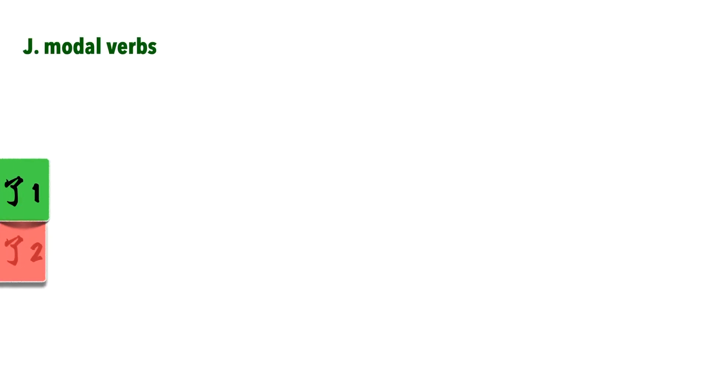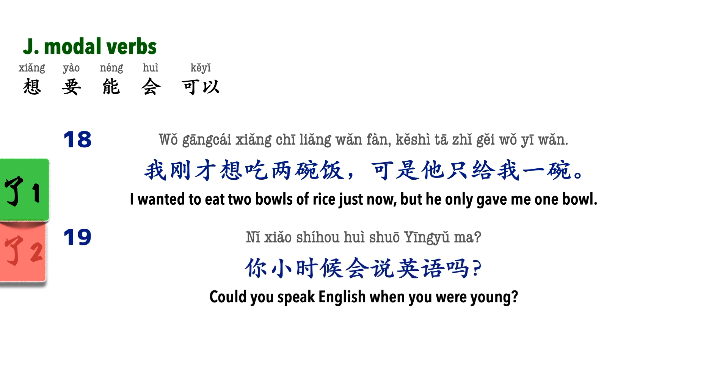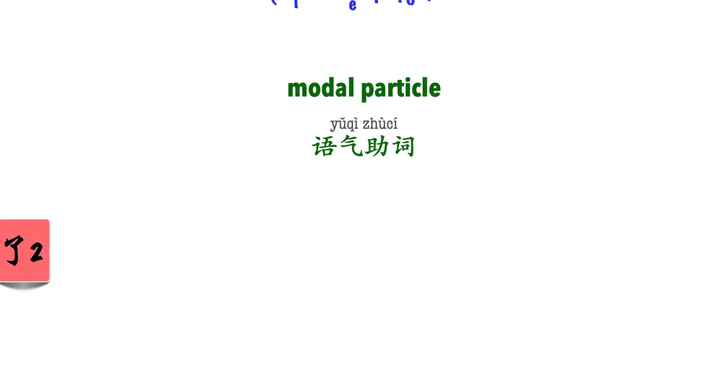Modal verbs. Modal verbs like 想,要,能,会,可以 express possibility, ability, or willingness, not completion, so again, 勒1 is not used. 我刚才想吃两碗饭,可是他只给我一碗. 你小时候会说英语吗? Are you still surviving? Good. Let's move on to modal particle 勒2.